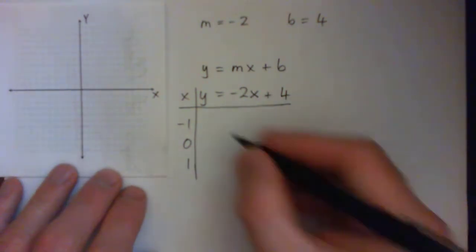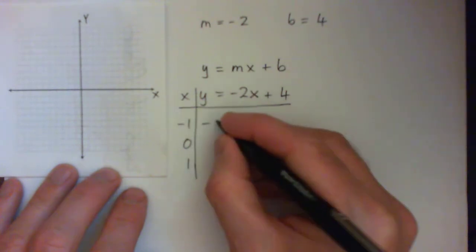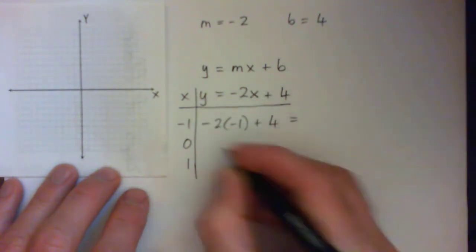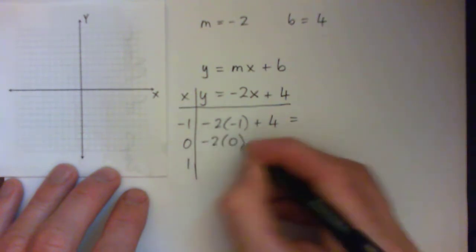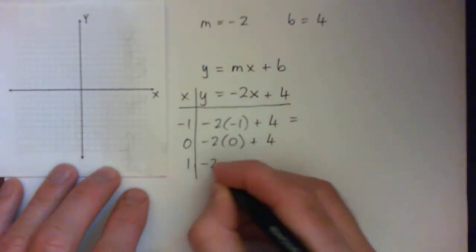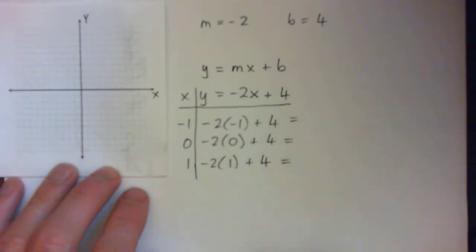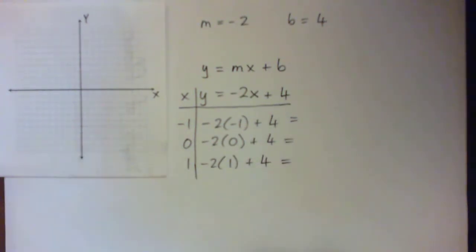But in any case, we get, if it's negative 1, I'll get negative 2 times negative 1 plus 4. And then negative 2 times 0 plus 4. And then negative 2 times 1 plus 4. So let's all take your time, press pause on the video, anyone watching from home, and just figure these out.